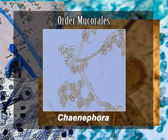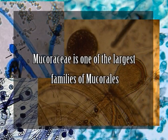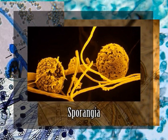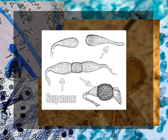The order Mucorales has by far the largest number of species and morphological diversity within the class Zygomycetes. Mucoralian species have a well-developed mycelium that is generally aseptate; when septa are present, they lack pores with specialized plugs. Mucoraceae is one of the largest families of Mucorales. Genera belonging to Mucoraceae produce non-apophysate sporangia with either deliquescent or persistent walls. There is often a slight constriction of the sporangia immediately below the sporangium. Zygospores have opposed, non-appendaged suspensors.